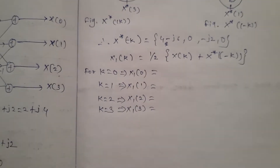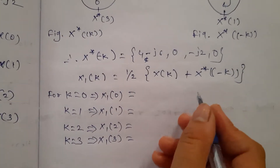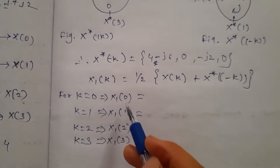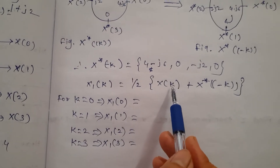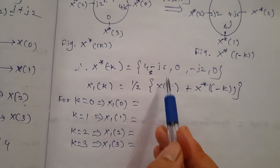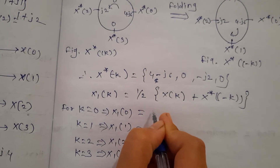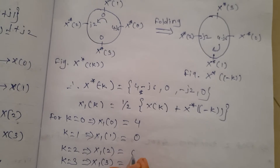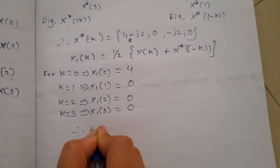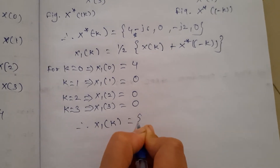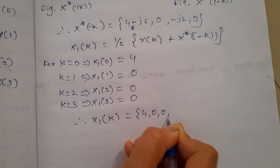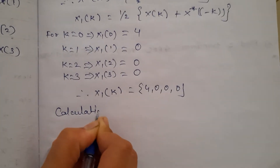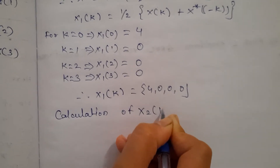Substituting the values and solving, the final answer is: X1(0) = 4, X1(1) = 0, X1(2) = 0, X1(3) = 0. So the sequence for X1(k) = {4, 0, 0, 0}.